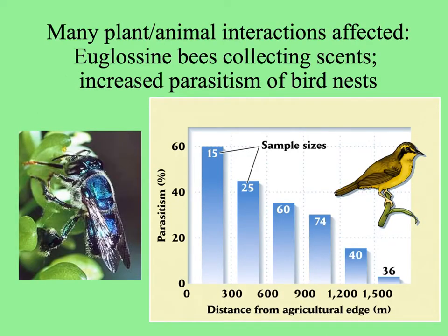Different kinds of biologists studied many different kinds of interactions. For example, the euglossine bees — shown on the left — collect scents from flowers that they then use for their own pheromones. They weren't able to make the trip across the open areas from patch to patch of forest that was left. And the example on the right is data from birds nesting: if their nests were closer to the cleared area, the rates of nest parasitism were much greater, and so they fledged many fewer offspring.